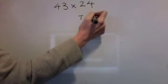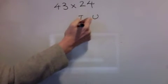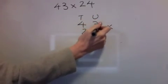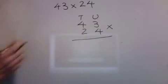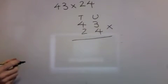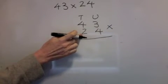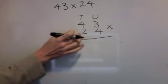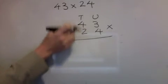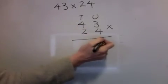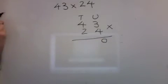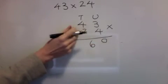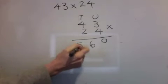Tens and units sum, and we've got 43 times 24. The first thing I'm going to do is multiply by this side here — the two. Now the two is actually 20 because it's in the tens column, so nought down. Units first: 2 times 3 is 6. 2 times 4 is 8.